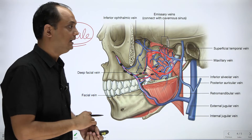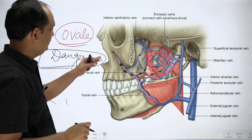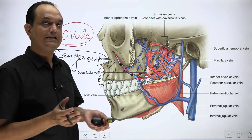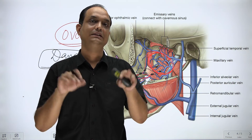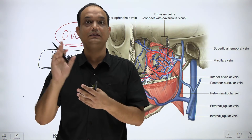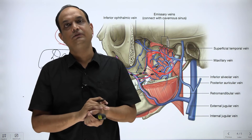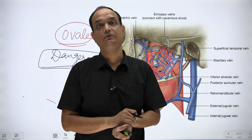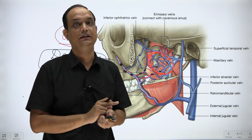This dangerous area of the face connects to a broader concept: previously we discussed the dangerous layer of the scalp, which is the fourth layer. In both cases — dangerous layer of scalp and dangerous area of face — what makes them 'dangerous' is that infection originating outside the cranial cavity gains entry inside the cranial cavity. In both cases, emissary veins play a critical role in transmitting the infection intracranially.